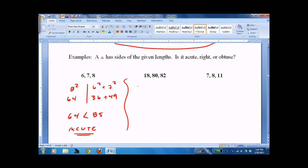So here we take 82. 18-squared, squared of course, plus 80-squared. We get 6,724. 324 plus 6,400. Say 6,724 equals 6,724. It's a right triangle.